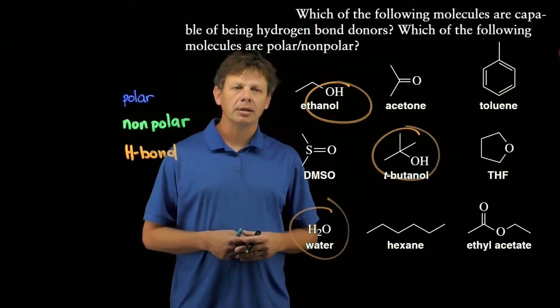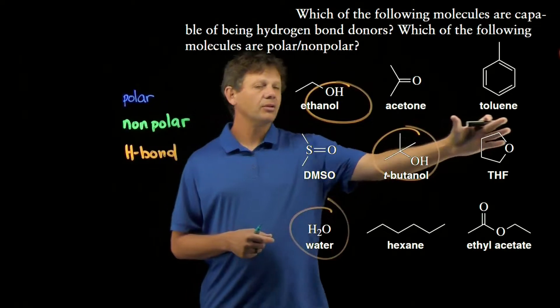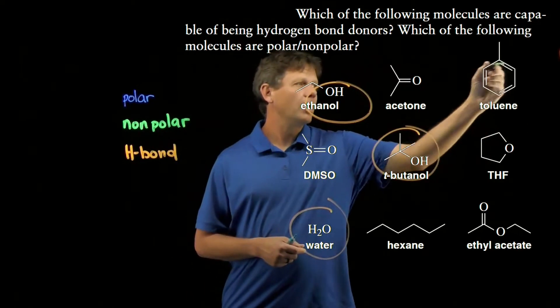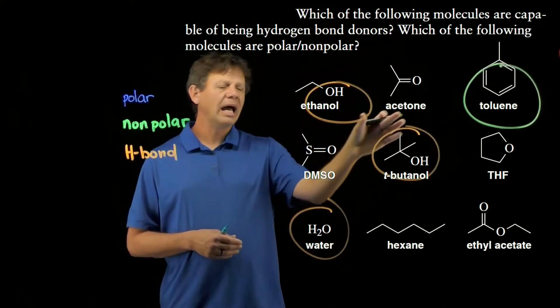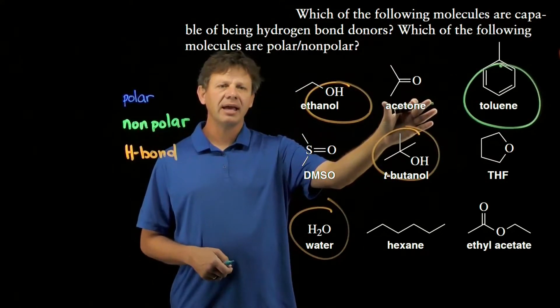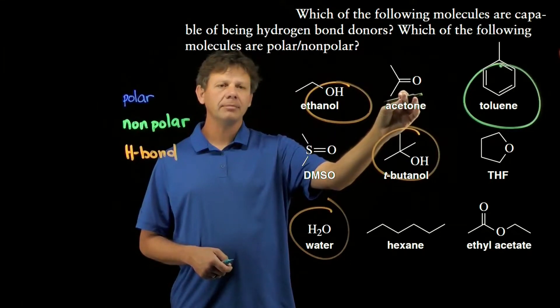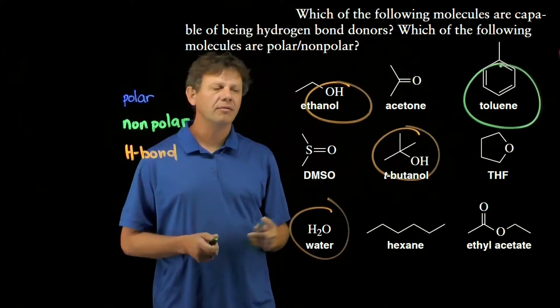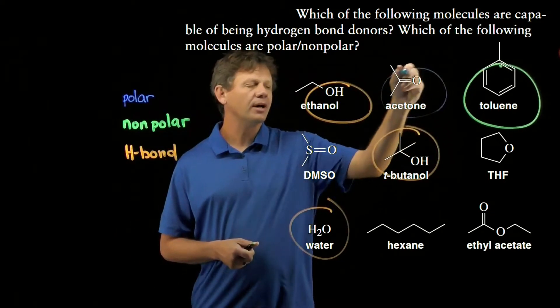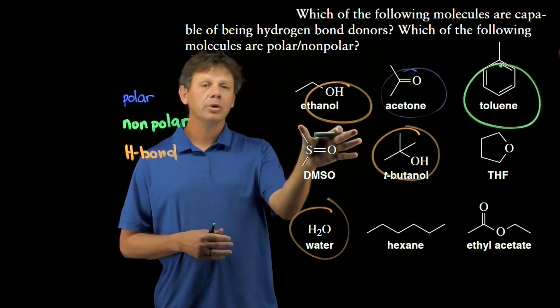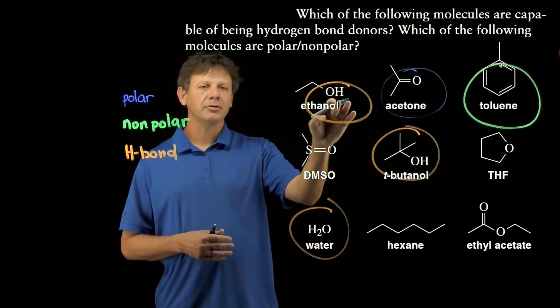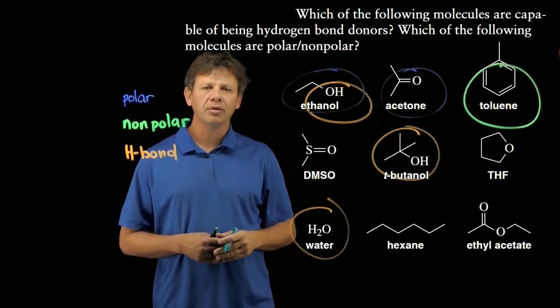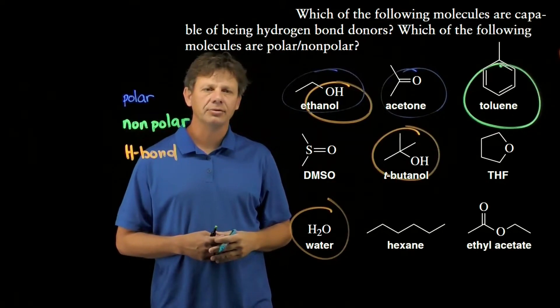Let's do our nonpolar molecules next. In this case, toluene having no electronegative atoms is an example of a nonpolar molecule. Acetone does have an electronegative atom, so that carbon-oxygen bond is going to be polarized in the direction of oxygen. Acetone would qualify as a polar molecule, as would ethanol because it has an electronegative atom. Ethanol is an example of a molecule that is both polar and a hydrogen bond donor.